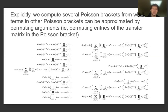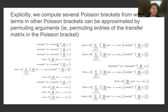Especially for the two-dimensional case, we were computing several Poisson brackets from which terms can be approximated by permuting arguments — i.e., permuting entries of the transfer matrix in the Poisson bracket. There were several different types of characteristics of these Poisson brackets: we have terms which are products of alternating poly-bases from quantum mechanics, products of sine terms, and the sine function is dependent upon one spatial position u' as well as a spectral parameter plus or minus eta times some constant times another poly-operator.